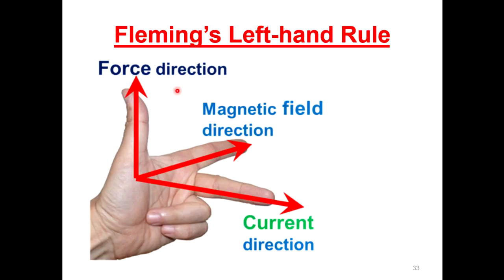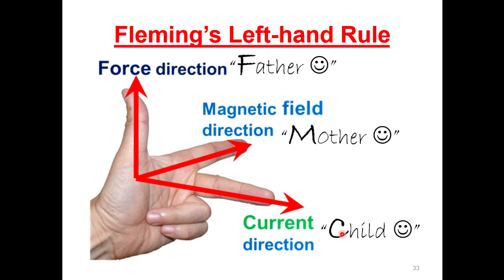To determine the direction of the force on the current-carrying conductor, we use Fleming's left-hand rule with three fingers at 90 degrees to each other. The thumb shows the direction of force. The pointer follows the direction of the magnetic field, always from north to south. The center finger shows the direction of the current. An easy way to remember is F, M, C — father, mother, child: father for force, mother for magnetic field, child for current.